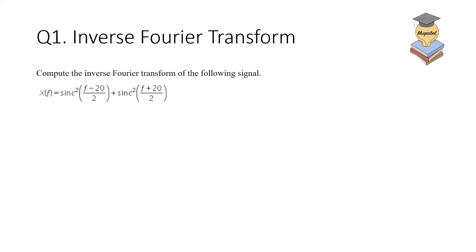Let's start. The first question says we have the following inverse Fourier transform problem. Compute the inverse Fourier transform of the following signal: we have x(f), we have sinc squared, and we have the following expression.